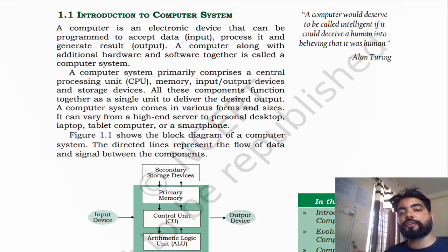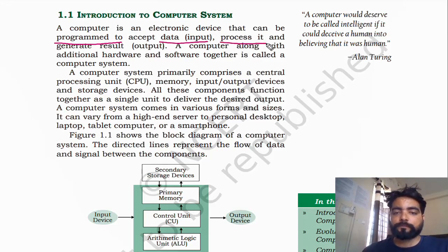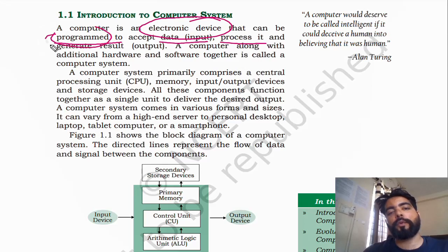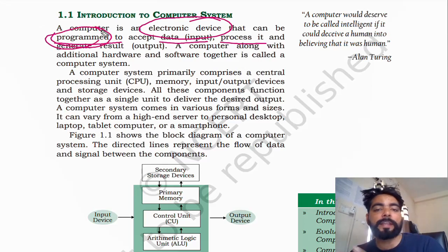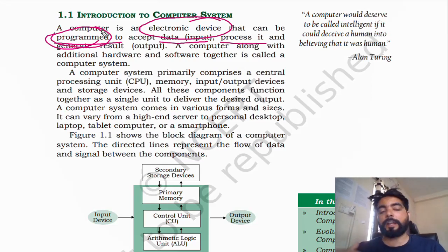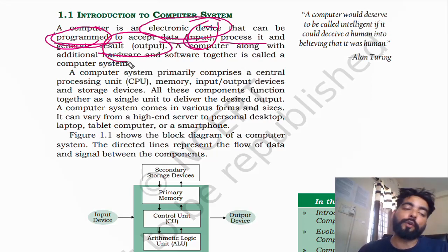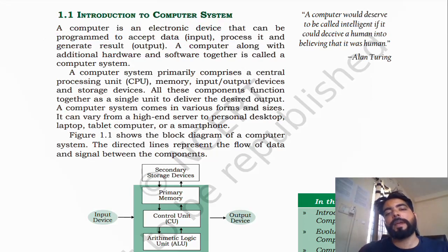A computer is an electronic device that can be programmed to accept data, process it, and generate result output. Mainly three steps: first is input, second is process, and third is output.